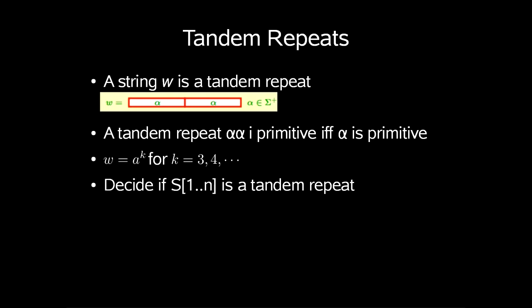A tandem repeat and tandem array is what we call a string property. For example, a string can be a tandem repeat. So how difficult is it to decide if a string S of length n is a tandem repeat?